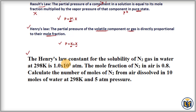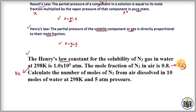The problem says that the Henry's law constant for the solubility of N₂ gas in water at 298 K is 1.0 × 10⁵ ATM — that is the K value given. The mole fraction of N₂ in air is 0.8. The question asks to calculate the number of moles of N₂ from air dissolved in 10 moles of water at the same temperature, and the pressure is given as 5 ATM.